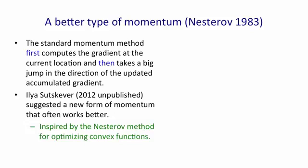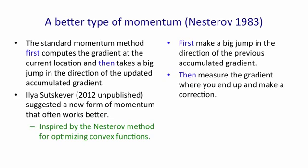Ilya Satskiva has found that it works better, in many cases, to use a form of momentum suggested by Nesterov, who was trying to optimize convex functions, where we first make a big jump in the direction of the previous accumulated gradient, and then we measure the gradient where we end up and make a correction. It's very, very similar, and you need a picture to really understand the difference.